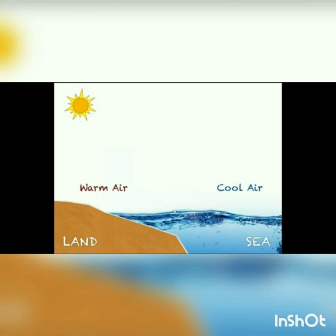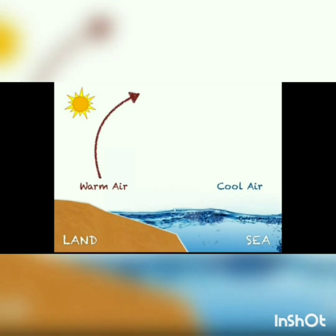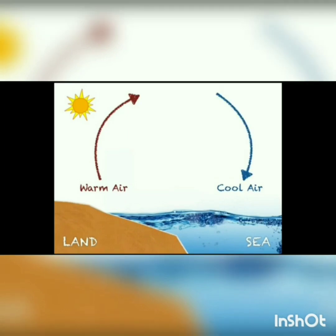Now, we have different temperatures of air, and from prior knowledge, we have learnt that warm air particles become less dense and will float or rise in the atmosphere. The warm or hot air expands and rises up, and oppositely, cool air becomes denser and sinks. Hence, we have warm rising air over the land and cool sinking air over the seas or ocean.